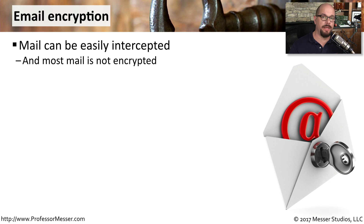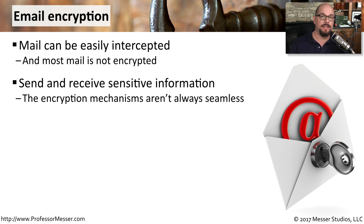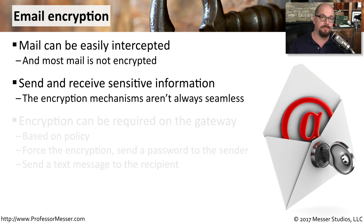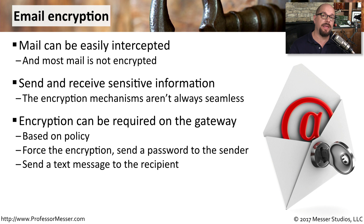As our emails traverse the internet, it becomes very easy for a third party to view that information. Many times the mail we're sending is all in the clear — it's not encrypted. If you're sending and receiving sensitive information, it's practically a requirement that this information be encrypted in the email message. The challenge is that the encryption process for most email systems is not seamless or automatic, and there are a number of steps you have to go through to make sure your email message will be encrypted. The email gateway is a great place to check whether outbound emails are properly encrypted — you can check for a certain type of traffic or traffic from a particular email address and make sure that a policy applies to encrypt that data.